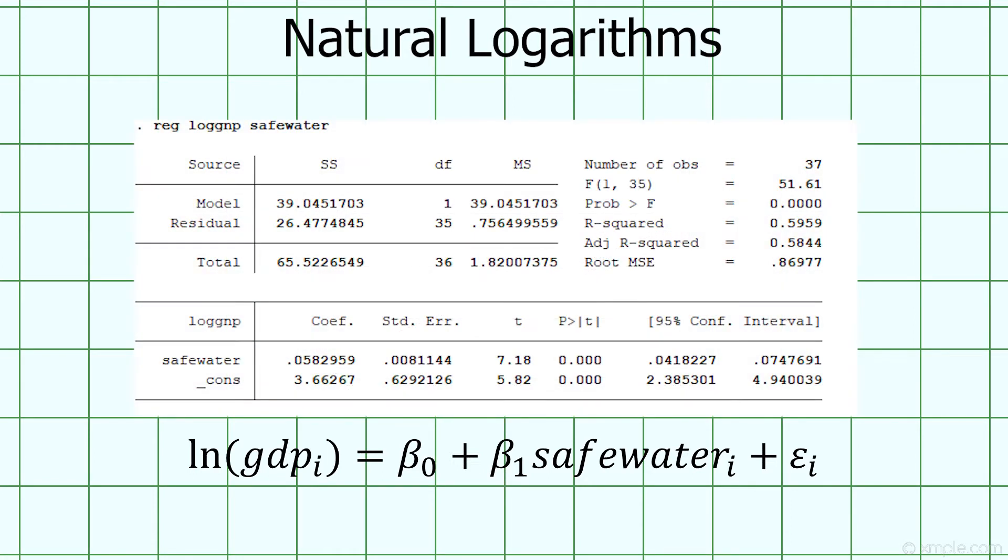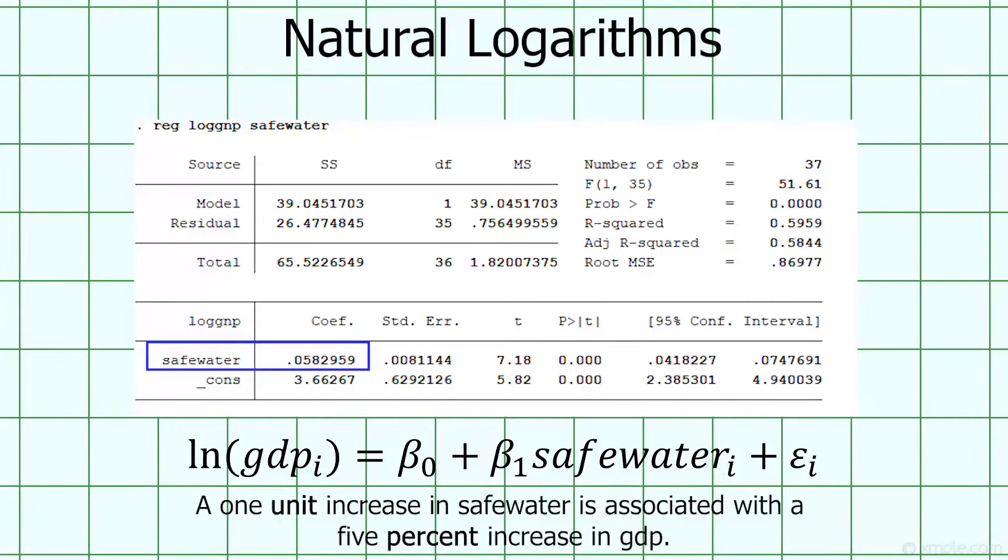Looking at the regression output, how would we interpret this coefficient on safe water with log GDP as the dependent variable? Obviously, it means a one unit increase in safe water is associated with a 1/20th of a unit increase in the natural log of GDP, but there's a more useful way to interpret models with natural logs. Thanks to the properties of natural logs, this coefficient is telling us that a 1 unit increase in safe water increases GDP by 5% since a unit change in logs is equal to a percentage change in levels.